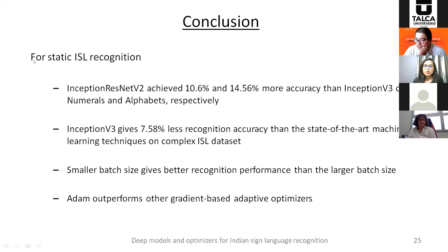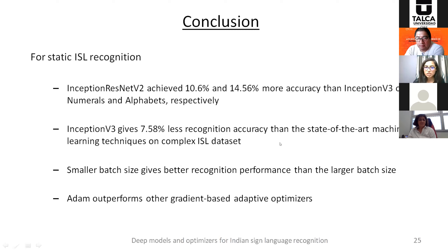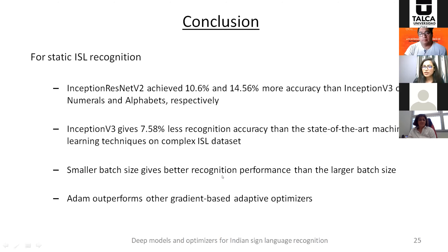In conclusion: Inception ResNet V2 achieved 10.6% and 14.56% more accuracy than Inception V3 on numerals and alphabets respectively — a very significant gap. Inception V3 gives even lower accuracy than prior machine learning-based methods by about 8%. Small batch sizes give better accuracy than large ones, and Adam outperforms all other gradient-based optimizers tested.